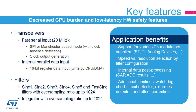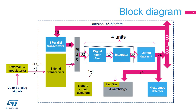The entire digital filter for Sigma Delta modulators interface consists of 8 serial transceivers, 4 sync filter parts and integrators, 4 output data units, 4 analog watchdogs, 8 short-circuit detectors, 4 extreme detectors, and 8 parallel data input registers.